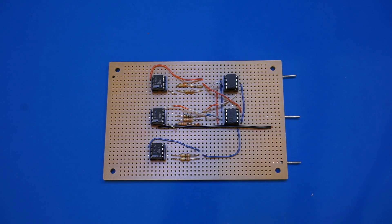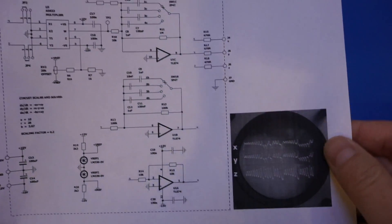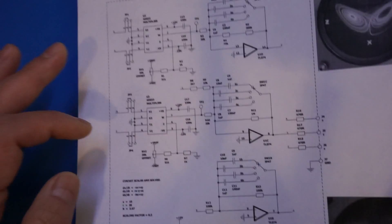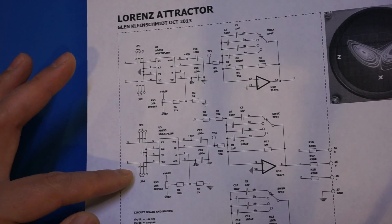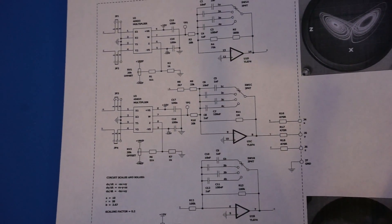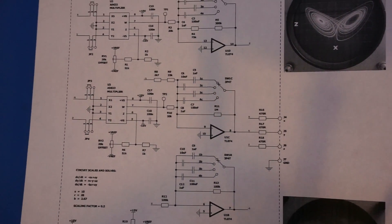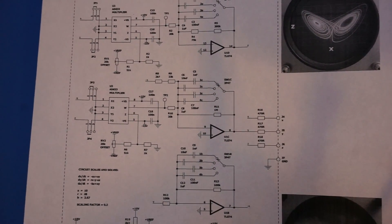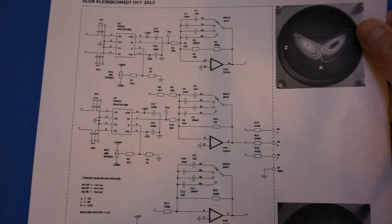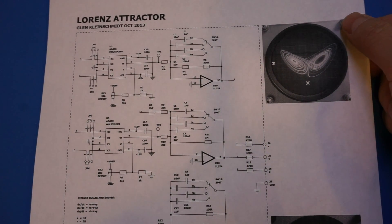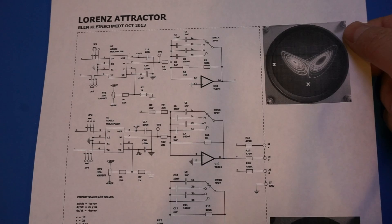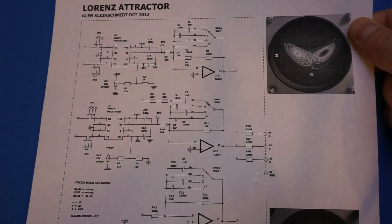So I searched the internet and found the Glenn Klenshmus design and wanted to give it a try. This circuit uses two analog devices AD633 analog multiplier ICs. And these ICs are quite expensive, they run about $10 each on Digikey. And even in quantities of a thousand, they cost more than $6 each. And for less than $10, you could get 5 of these on eBay.